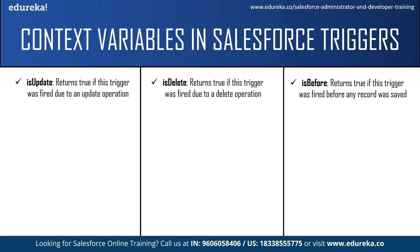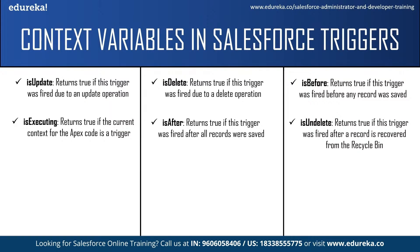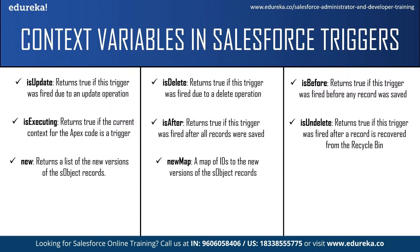After that we have isBefore — this returns true if the trigger was fired before a record was saved to the database. Next is isExecuting — this returns true if the current context for the Apex code is a trigger and not a Visualforce page, a web service, or an API call. The next context variable is isAfter — this returns true if the trigger was fired after all records were saved to the database. Next is isUndelete — this returns true if the trigger was fired after a record was recovered from the recycle bin. The new context variable returns a list of new versions of Salesforce object records, available in insert, update, and undelete triggers, and records can only be modified in before triggers. newMap is a map of IDs to the new version of Salesforce object records, available in before update, after insert, after update, and after undelete triggers.